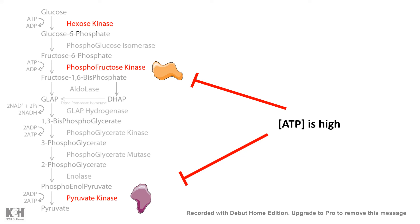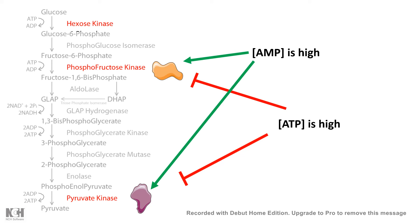On the other hand, if AMP level is high, that means ATP is low and the body is under energy demand. In this situation, AMP concentration works as an allosteric activator of phosphofructokinase and pyruvate kinase. The flux then flows through the glycolytic pathway, ensuring ATP is generated and ultimately a lot of energy can be produced.